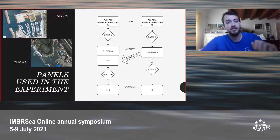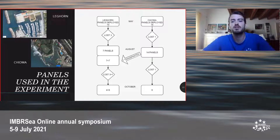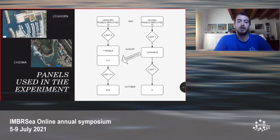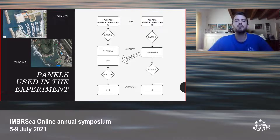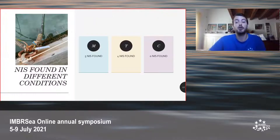Here is the history of our panels: 10 were deployed in Livorno and 15 in Chioma. Some of them were lost. Then in August, 14 out of the 15 panels from Chioma were retrieved, and 7 out of those 14 panels were transplanted into Livorno. At the end, in October, after losing more panels again, we were left with 4 that stayed all the time in Livorno, 6 that started in Chioma and finished in Livorno, and 6 that stayed in Chioma all the time.